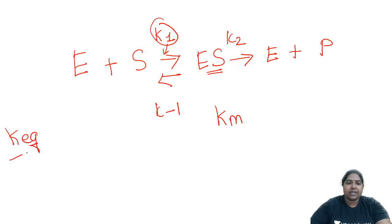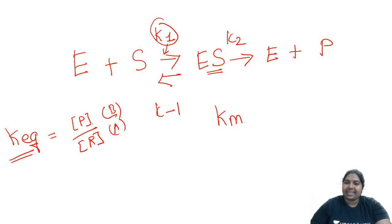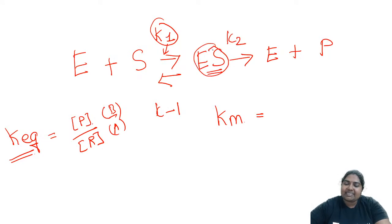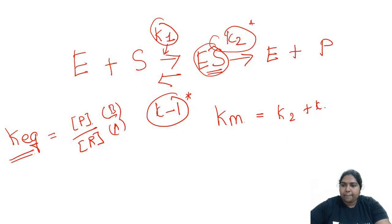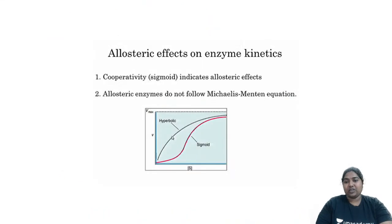Km is a dissociation/association constant. The dissociation terms (k−1 and k2) go in the numerator, and the association constant (k1) in the denominator, giving Km = (k2 + k−1) / k1. If the enzyme follows the MM equation, it produces a hyperbolic curve. If the enzyme is allosteric, it does not follow the MM equation.